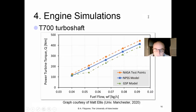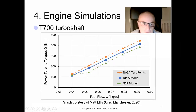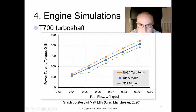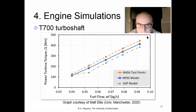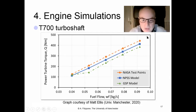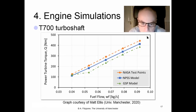A further comparison for the T700 plots power turbine torque — the output delivered to the main rotor — against fuel flow. NASA test data points are compared against both NPSS and GSP predictions; neither code reproduces the test data exactly, though NPSS appears closer. This work was carried out by one of the lecturer's PhD students, who studied helicopters before becoming an expert in aeroengine simulation and deterioration.